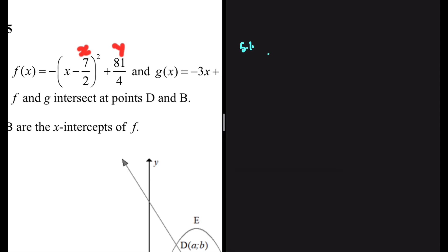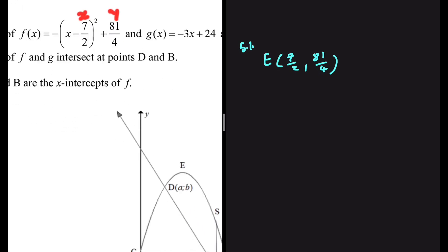For the coordinates of E, we have X is equal to 7 divided by 2, and Y is equal to 1 divided by 4. If here we had a plus sign, then it would be minus 7 divided by 2. And if we have a minus sign, it is just 7 divided by 2. That's how it works when you're given your equation in that form.